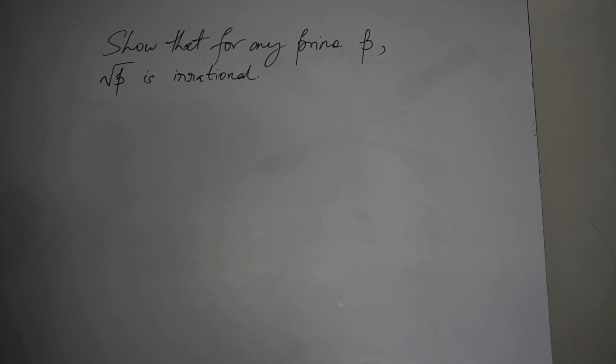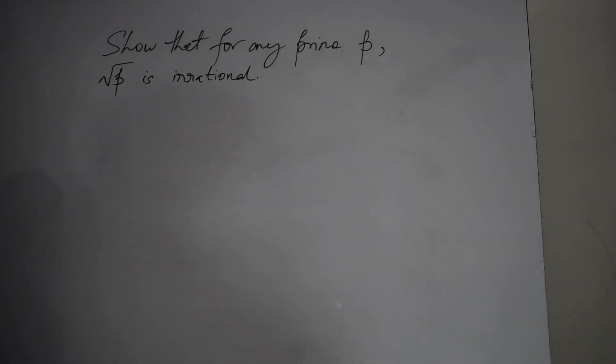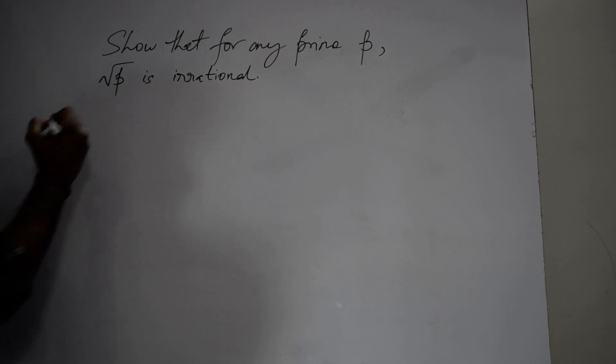Welcome to my YouTube channel. In this discussion, I am going to solve the problem where we have to show that for any prime p, root p is irrational. Our method of proof will be very simple. First, we will assume that root p is a rational number and then we will arrive at a contradiction. So let us start solving the problem.